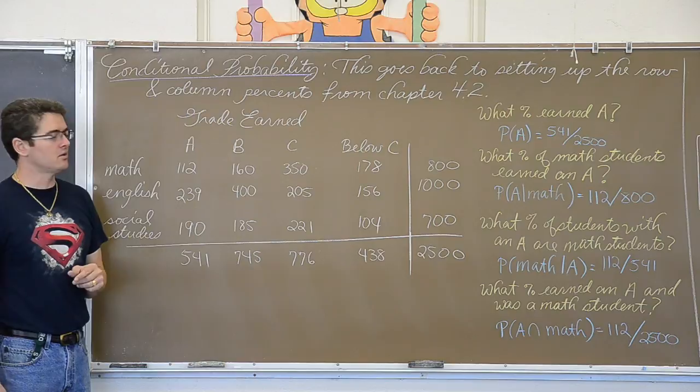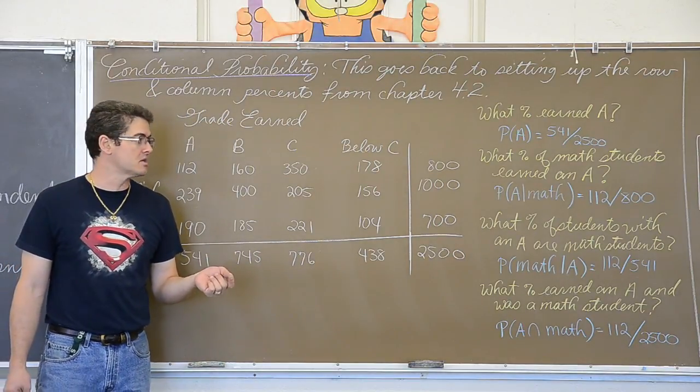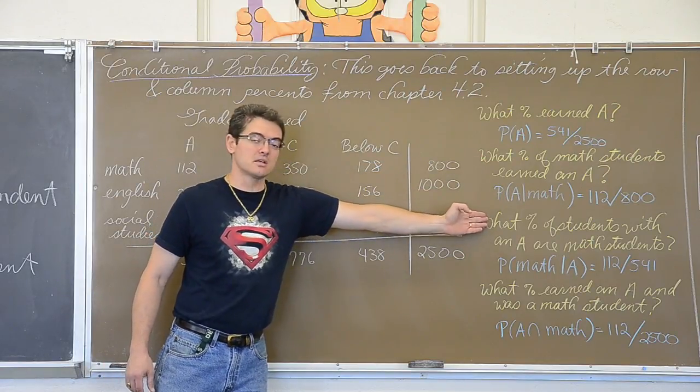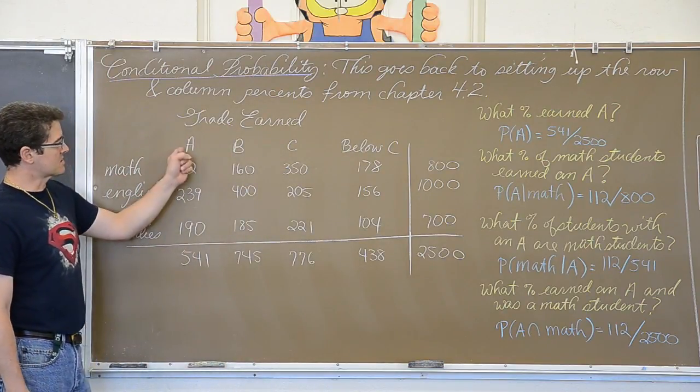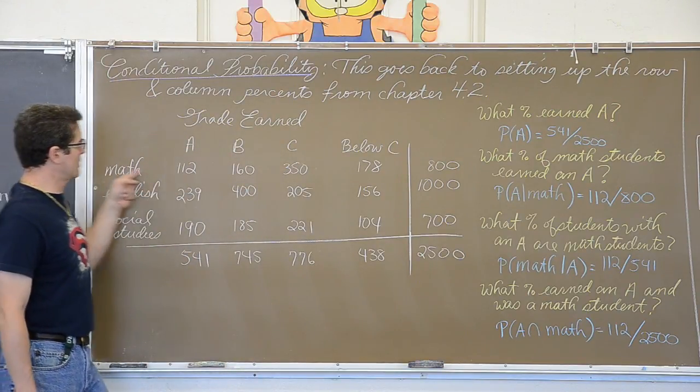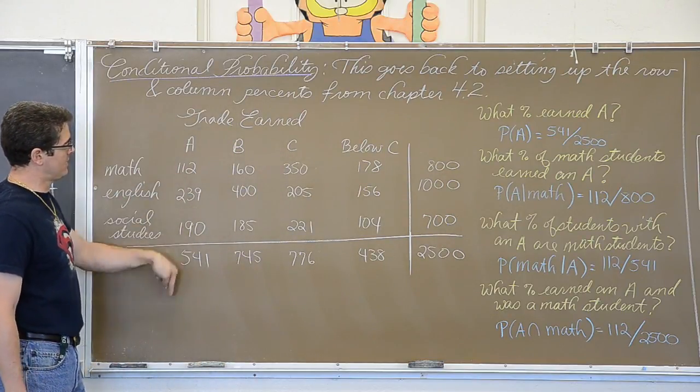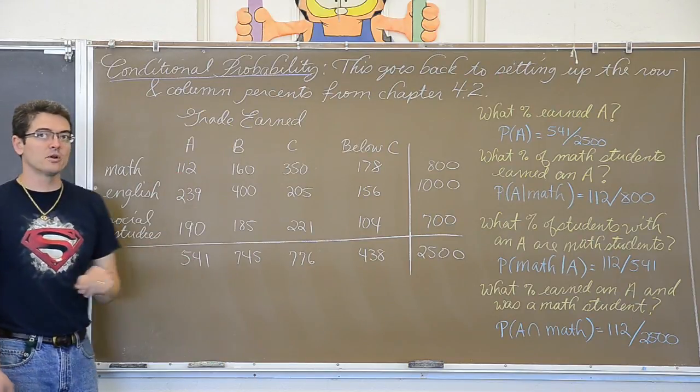What if I turn the question around and I say what percent of students with A's are Math students? So in this sentence the condition is you are a Math student. In this sentence the condition is you are an A student. Well, A students is the top of the column. So instead of doing a row percent for Math being a condition, we are doing a column percent where the grade is the condition and we have 112 divided by 541.